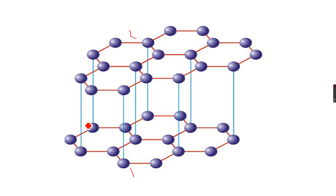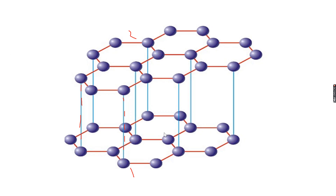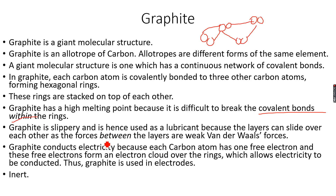Within a layer, the red lines represent covalent bonds, and the blue lines represent van der Waals forces between layers. Within a layer, there are only covalent bonds, which is why graphite has a high melting point — it requires a lot of energy to break those covalent bonds.